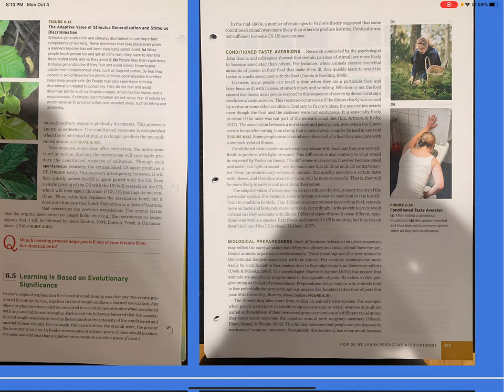For example, taste aversions are easy to condition in rats, but difficult to condition in birds. The difference occurs because in selecting food, rats rely more on taste and birds rely more on vision. Accordingly, birds quickly learn to avoid a visual cue they associate with illness. Different types of stimuli can cause different reactions even within a species. Rats freeze and startle if the conditioned stimulus is auditory, but they rise on their hind legs if the conditioned stimulus is visual.